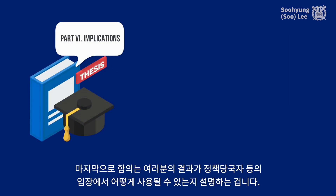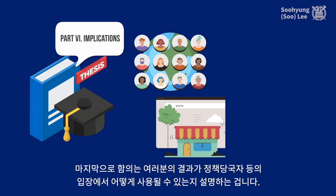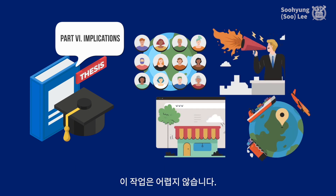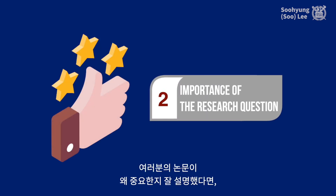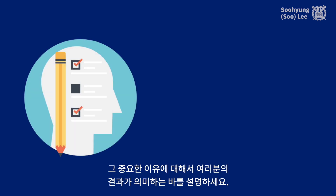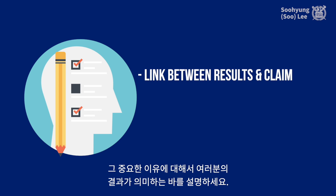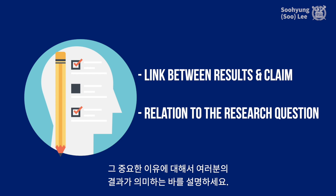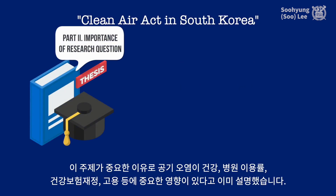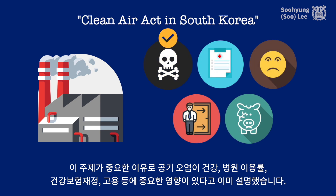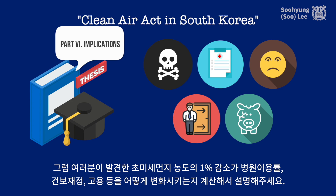Implications: you need to explain what your results mean to your audience, society, policy makers, countries, and so on. This task should not be daunting. Suppose you did a good job explaining component number 2 — why your research question is important. What you need to do is go back to that part and provide the link between your results and the aspects you claimed are importantly related to your research question. For the Clean Air Act example, in the second component you tried to convince your audience that the policy is worthy of attention because air pollution is directly related to people's health, number of hospital visits, associated monetary costs, ability to work, and productivity. So your job is to revisit each of these aspects and tell your audience what this 1% reduction in PM2.5 implies in terms of number of hospital visits, medical costs, likelihood of people staying at work, and so on.